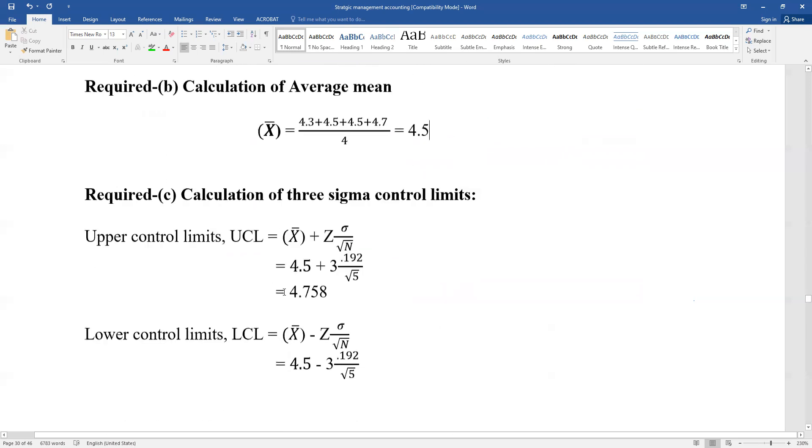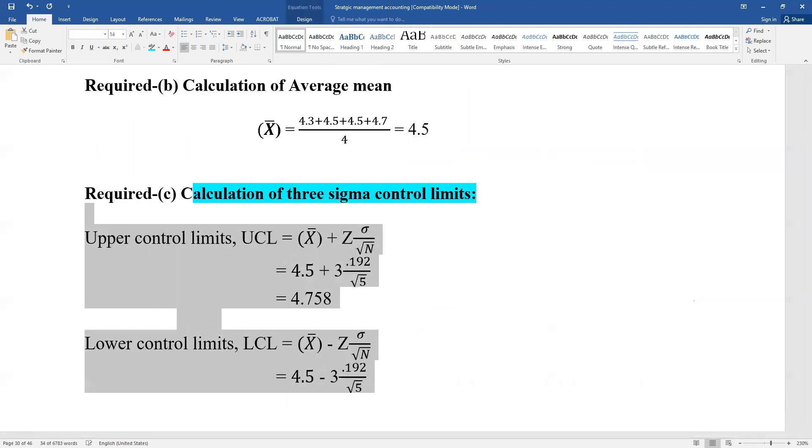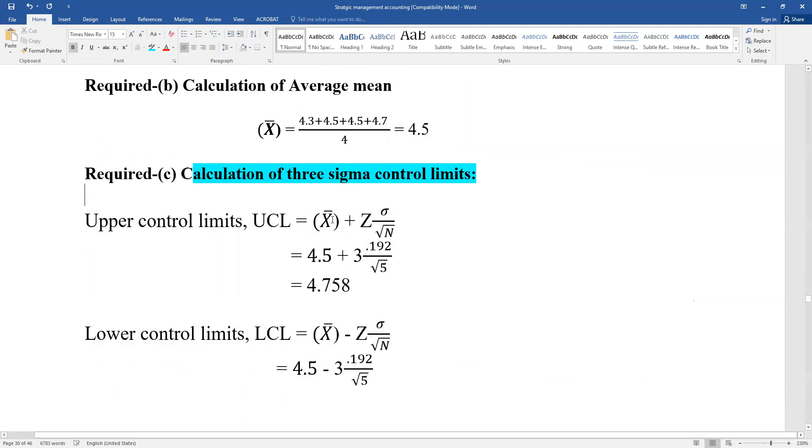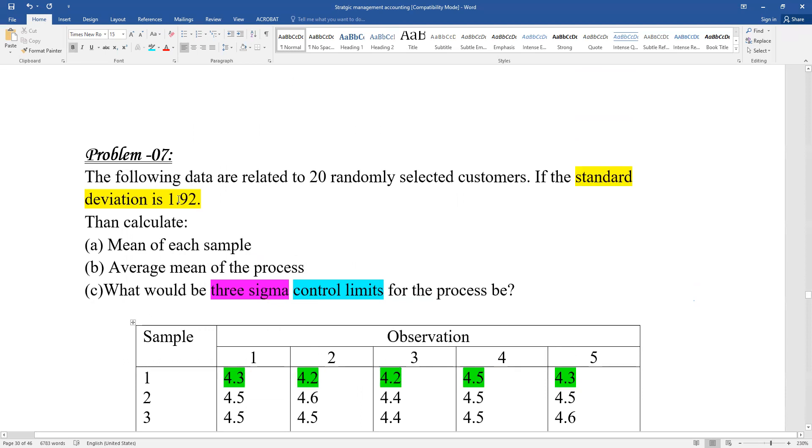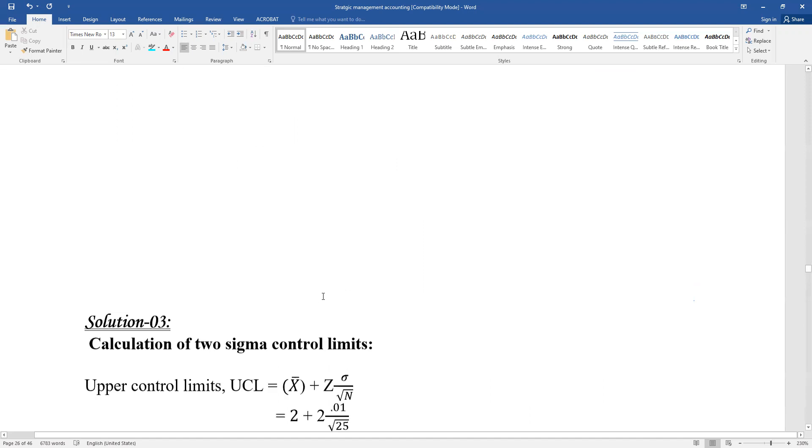Three sigma control limits: upper control limit (UCL) and lower control limit (LCL). UCL formula: X-bar plus... and the standard deviation is 1.92. The standard deviation is given.